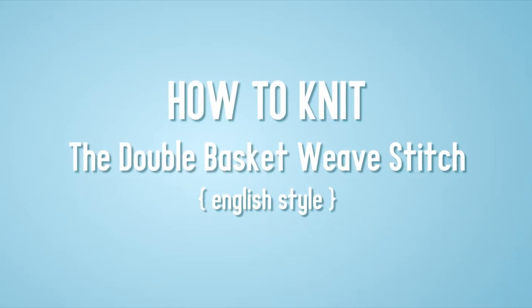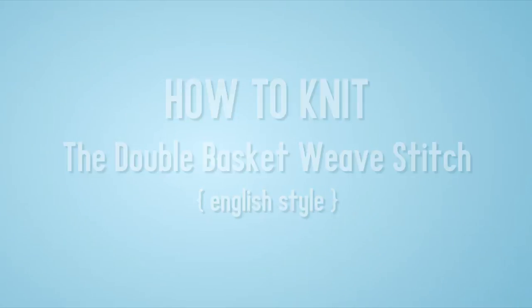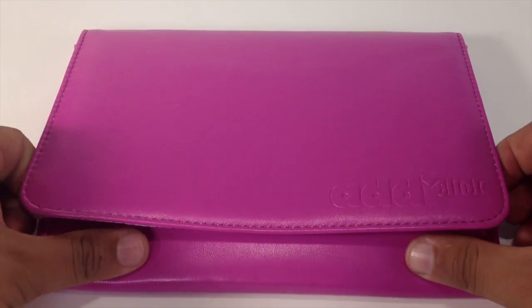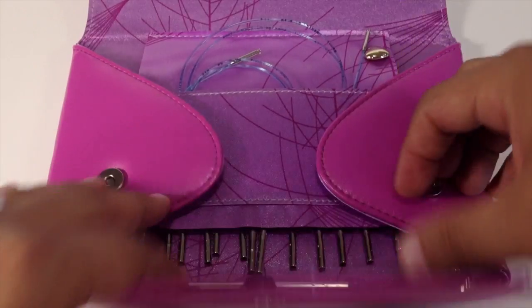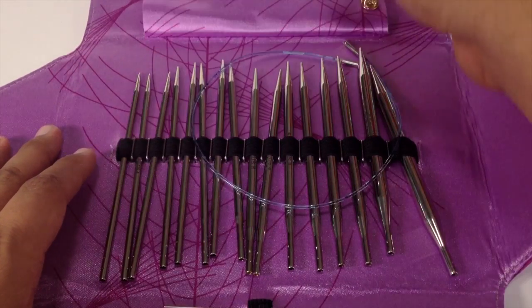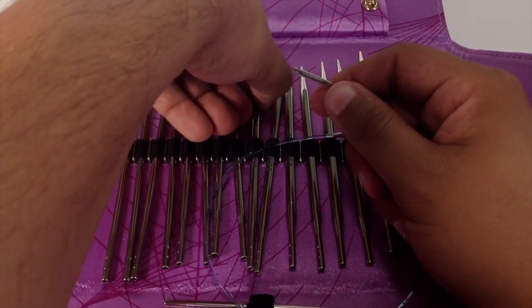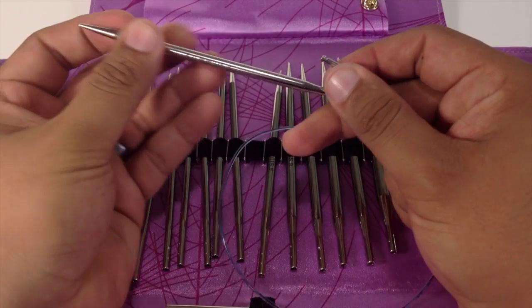How to knit the double basket weave stitch English style. For this tutorial you will need a pair of knitting needles. Special thanks to our sponsor Caswell for providing today's needles. Today we are using their Addy Lace Interchangeable Clicks in size 8.